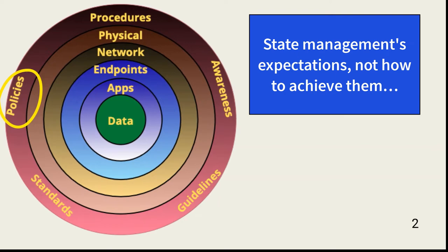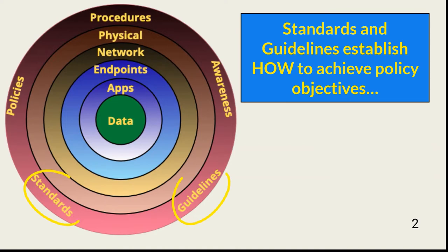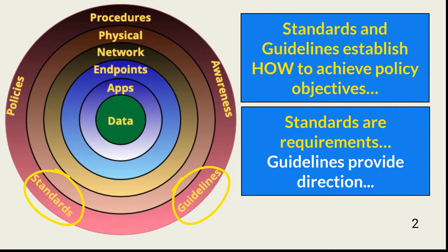Policies drive all the other layers. Standards and guidelines support policies by providing requirements and guidance about how to achieve management expectations. Standards are required steps that security teams must take to protect defined IT operations and resources. For example, a policy might state that all remote access by employee mobile devices must be encrypted, and a standard would stipulate how to achieve that encryption — for example, requiring the use of SSL VPN for all remote access.